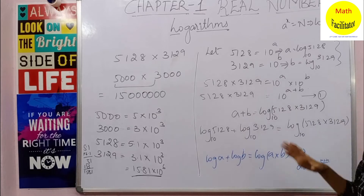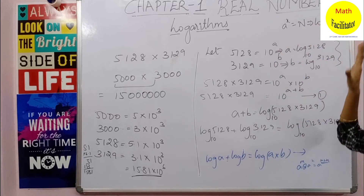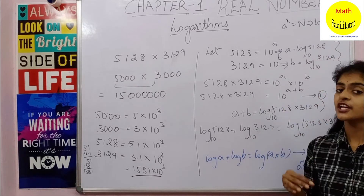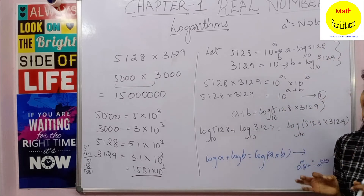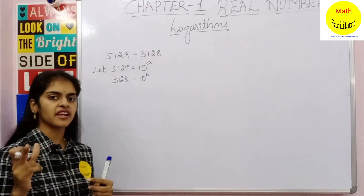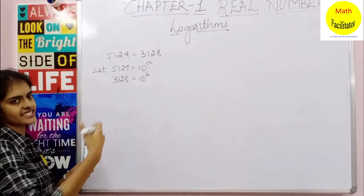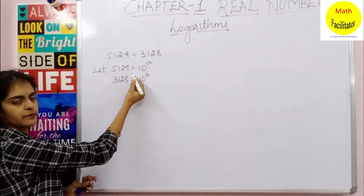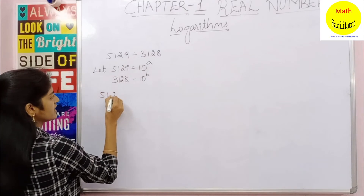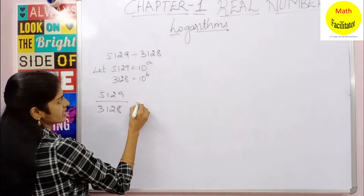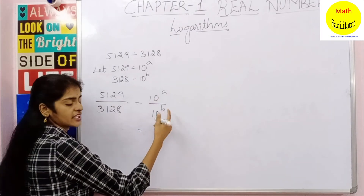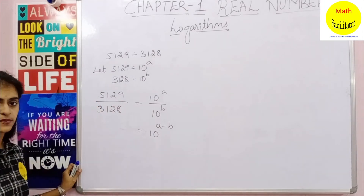Logarithm is a scoring concept — you only need to remember the conversion from exponent to logarithm and three identities. Now let us derive the second property. Let 5129 = 10^a and 3128 = 10^b. Dividing: 5129 ÷ 3128 = 10^a ÷ 10^b. Using the law of exponents — a^m ÷ a^n = a^(m-n) — we get 10^(a-b).